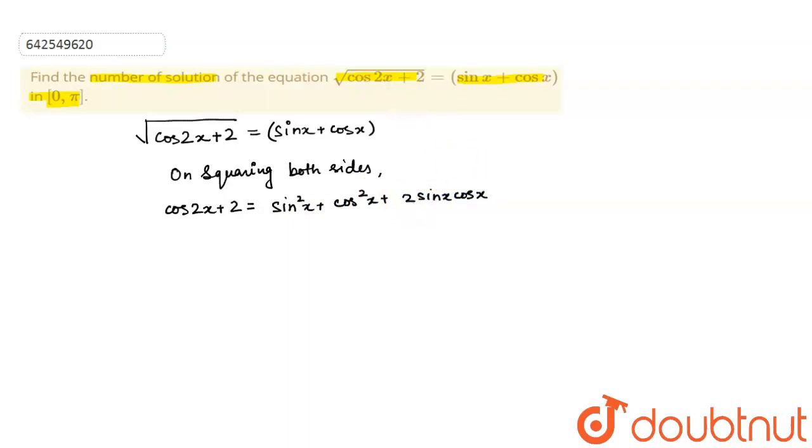And as we know, since sin square x plus cos square x equals 1 and 2 sin x cos x equals sin 2x. Correct?